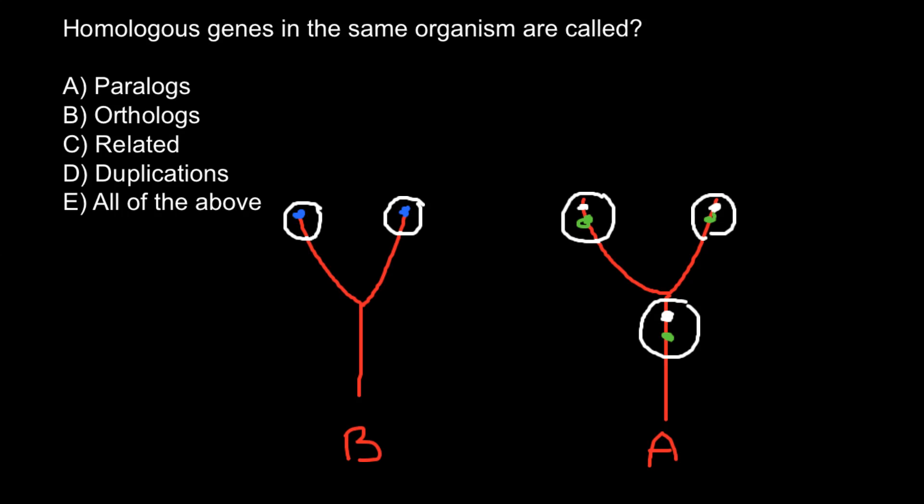All of them would be related — answer D. Paralogous genes arise due to duplication. All of them we can call homologous genes — genes that we compare at the sequence level and can find a lot of similarity. Homologous genes in the same organism are called paralogous, so the answer is A.